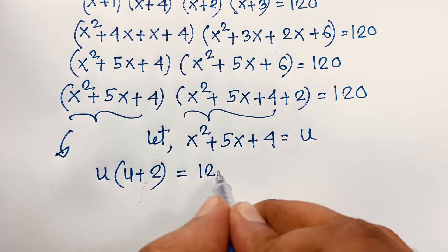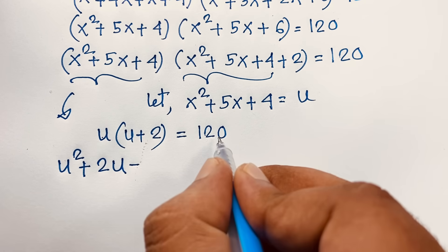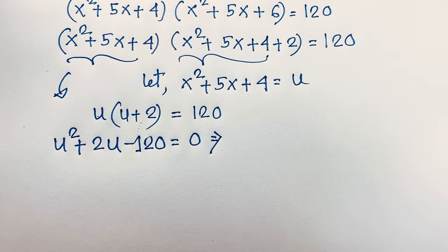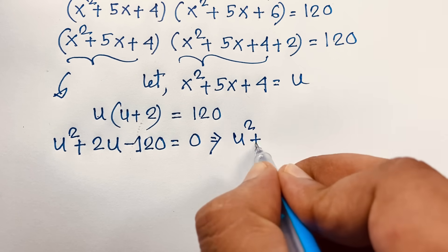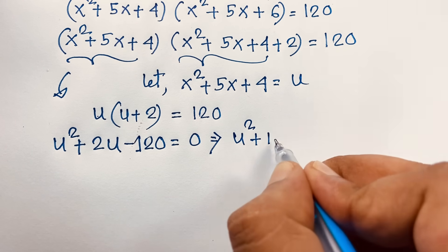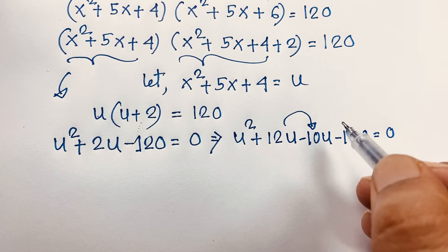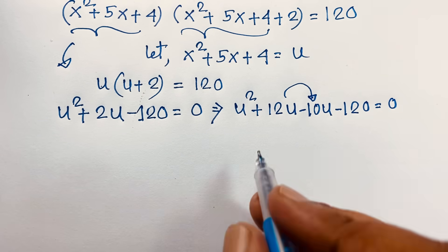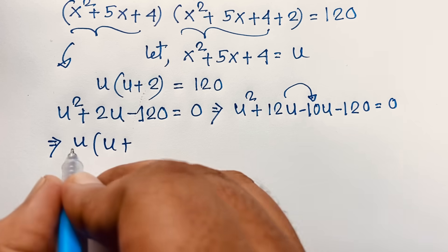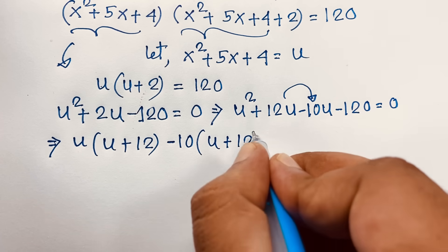Expanding u(u+2): u² + 2u = 120, so u² + 2u - 120 = 0. To factor, we need two numbers that multiply to 120 and differ by 2. That's 12 and 10: so u² + 12u - 10u - 120 = 0. Since 12 - 10 = 2, this gives us +2u. Taking u common: u(u + 12) - 10(u + 12) = 0.